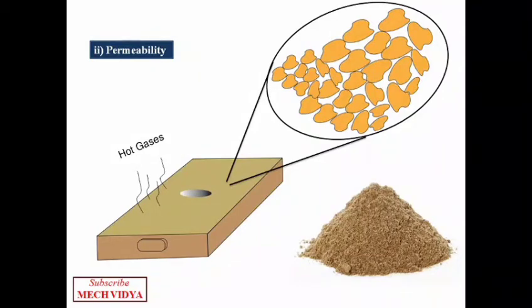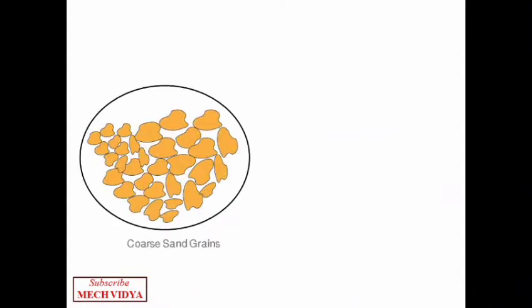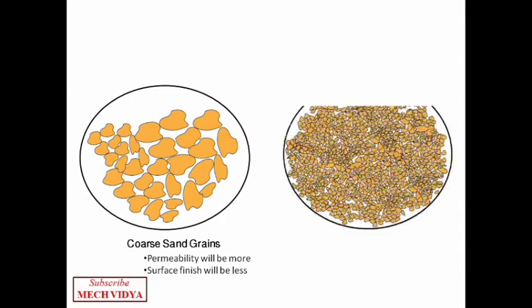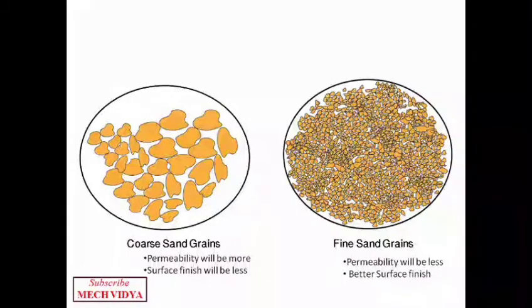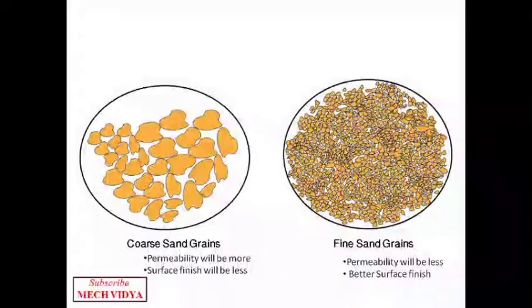If we use coarse sand grains, permeability will be more as you can see there are large number of white spaces, but the surface quality of the castings is generally less. On the other hand, if we use very fine sand particles then permeability will decrease, however the surface finish will be better.